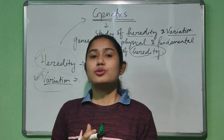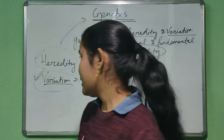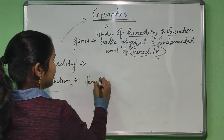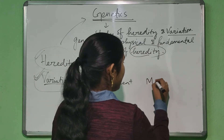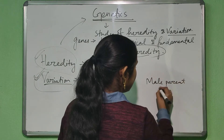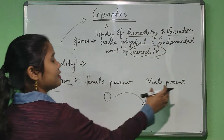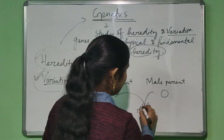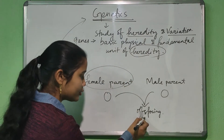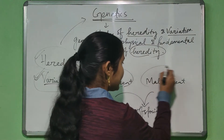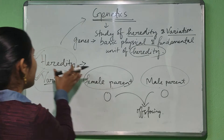This variation is due to the fusion of gametes. A gamete comes from the female parent and another gamete comes from the male parent. Both the male gamete and the female gamete fuse to form the offspring. Some characters of the female parent are transferred to the offspring and some characters of the male parent are transferred to the offspring, and that is called heredity.